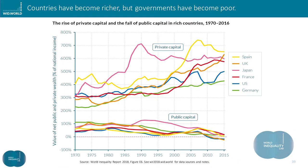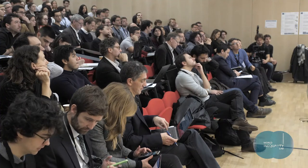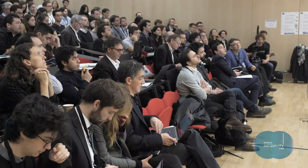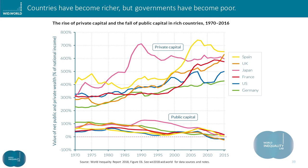A first key graph shows private capital expressed as a percentage of national income. In rich countries — Spain, UK, Japan, France, US, and Germany — these values increased from around 300% in 1970 to between 400% and 650% today. We see the impact of housing or financial bubbles in Spain and Japan, but these do not impact the longer-term trend. We also see the impact of the financial crisis in the US, UK, and France, but again the financial crisis does not alter the long-term trend. At the same time, the value of public capital moved from around 70% of national income to close to zero and even below zero in certain countries.